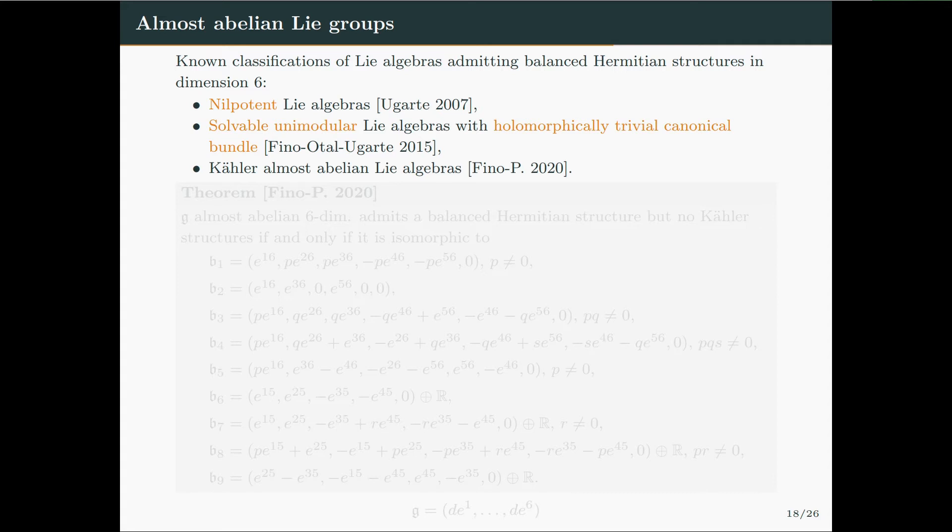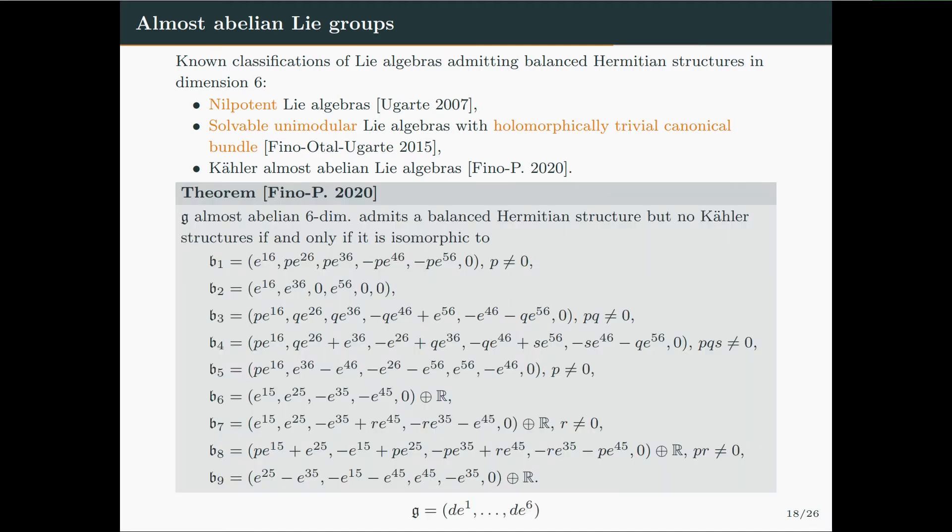We focused in dimension 6, where other results of classification were known. For nilpotent Lie algebras, the classification was obtained by Ugarte. For solvable unimodular algebras with holomorphically trivial canonical bundle, this was obtained by Fino and Ugarte. And in an earlier paper with Anna Fino, we classified Kahler almost abelian Lie algebras in dimension 6. So the classification theorem in the balanced case is this one. We have 9 classes of almost abelian Lie algebras, some of which depend continuously on some parameters. And the notation we are using is the one for which we are denoting the algebra by its structure equations, so that we say, for example, that this algebra admits a coframe E^1 to E^6, whose differentials are given by the entries of this vector.